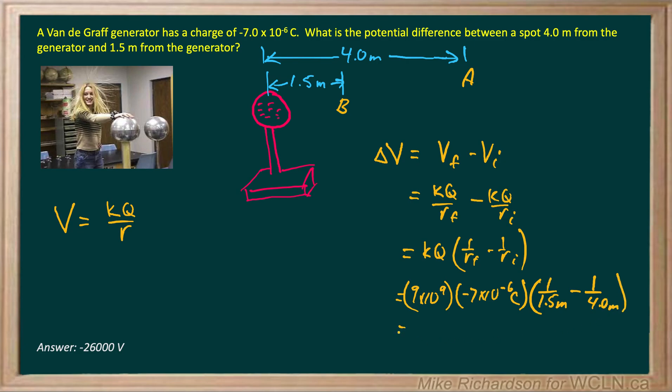And you crank all that out. And you get negative 26,000 volts. So there's your change in potential as somebody moves from A to B.